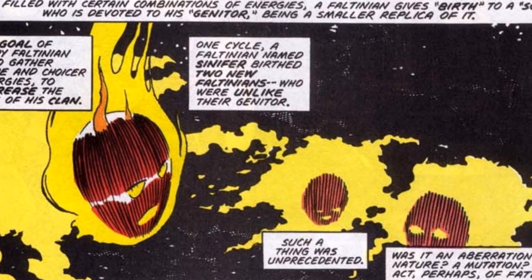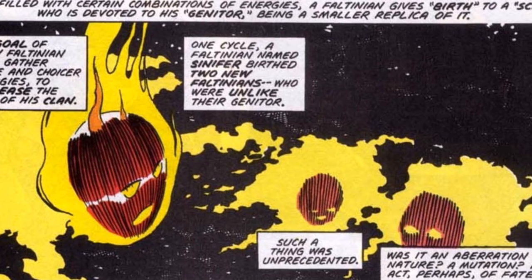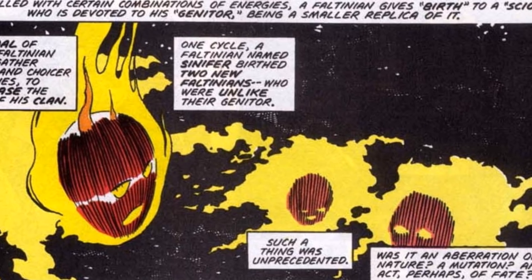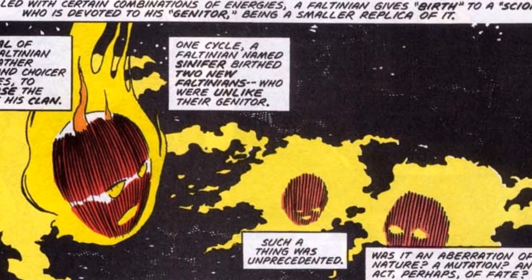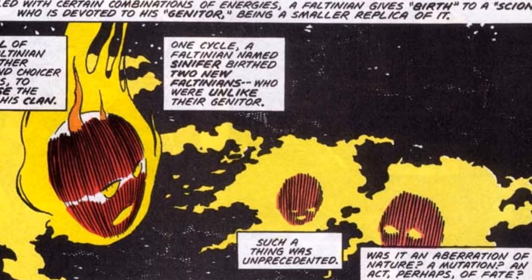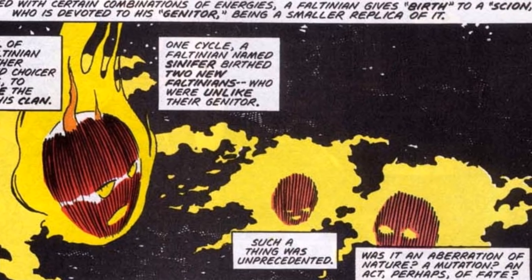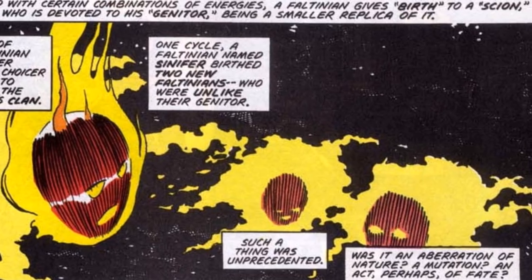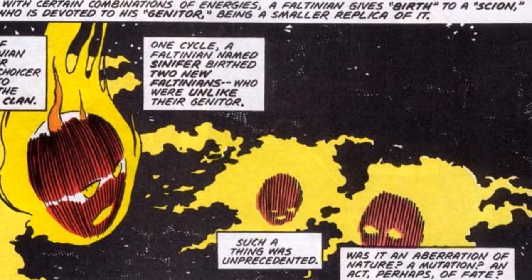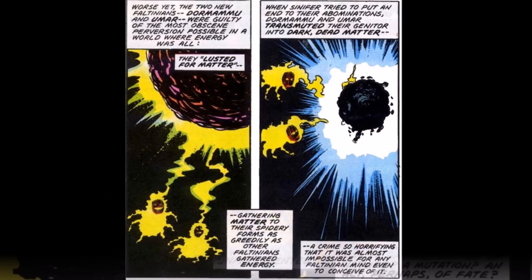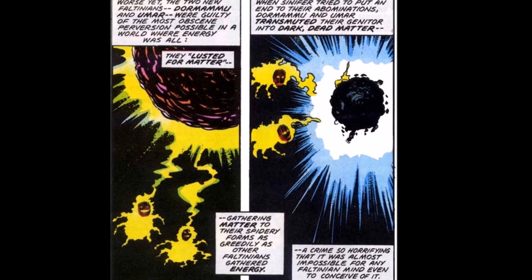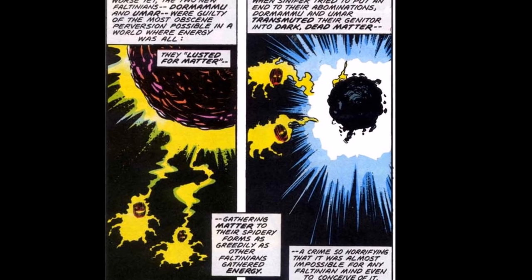Upon being filled with certain combinations of energies, Faultinians give birth to a scion, who is a smaller replica of their genitor or parent. The scion is devoted to the genitor. The goal of every Faultinian is to gather more and more of the best energies they can find and to increase the size of their clan. In a rare exception, a Faultinian named Sinifer gave birth not to one but to two scions, both of whom were different from their genitor — this had never happened before, and the reason behind this deviation is unknown.